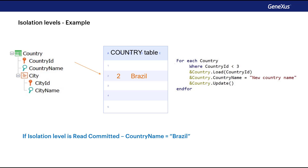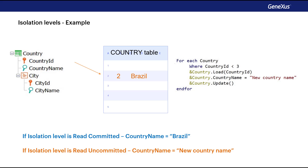Before the commit is executed, another user reads record 2 and will get different values depending on the isolation level. If the isolation level is Read Committed, the user gets the value Brazil for the CountryName attribute. If the isolation level is Read Uncommitted, the user gets the new country name as the CountryName attribute value. Read Uncommitted is a low isolation level while Read Committed is a higher level. The dirty read concept is associated with the Read Uncommitted level, referring to the possibility of reading data that has not been committed yet. For Serializable and Repeatable Read, they are even more restrictive — the new user will not even be able to access record 2 because it will be locked.